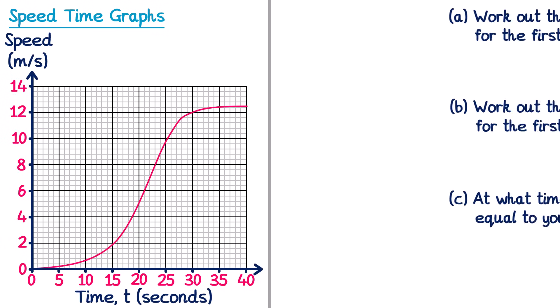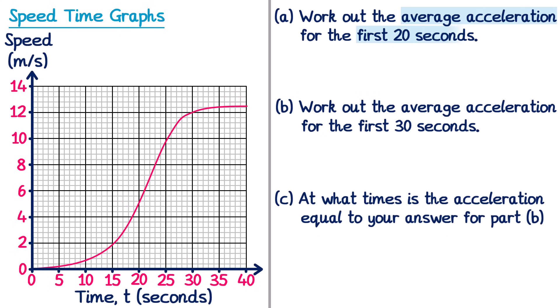Now let's look at one final exam question. Part A asks to work out the average acceleration for the first 20 seconds. Rather than drawing a tangent at t = 20, we draw a straight line from the point on the curve at 0 seconds to the point at 20 seconds. The gradient of this line gives the average acceleration. The change in y is 0 to 5 (so 5) and the change in x is 0 to 20 (so 20). Average acceleration = 5 ÷ 20 = 0.25 m/s².